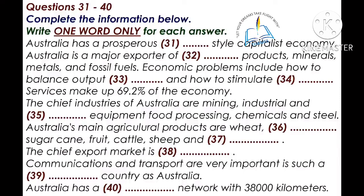China already supplies 5% of Australia's imports, the same amount as New Zealand. Meanwhile, we take 22% of our imports from the U.S., 17% from Japan, and 6% from the U.K. Australia imports a lot of machinery and transport equipment, especially computers and office machines, also telecommunications equipment, and we also have to import oil and petroleum products.